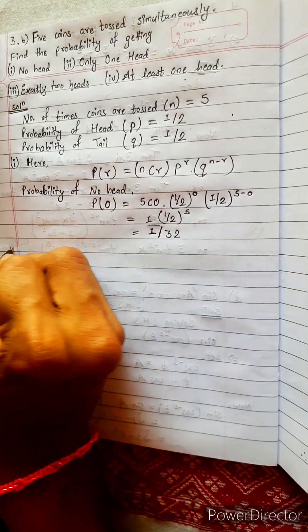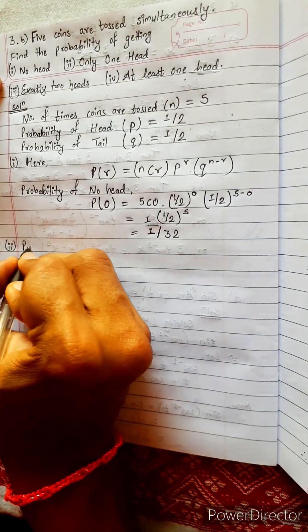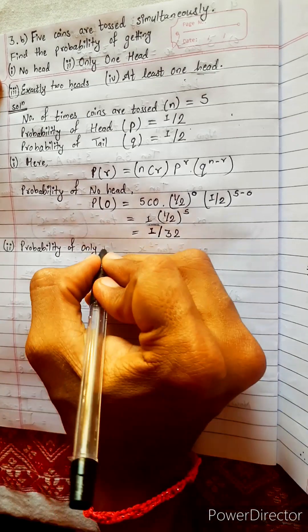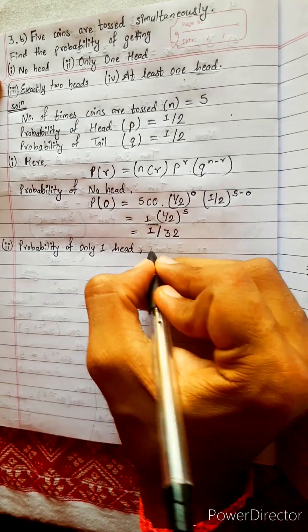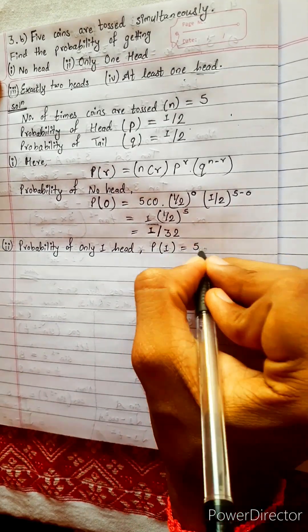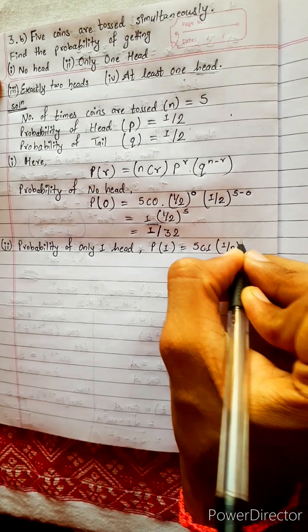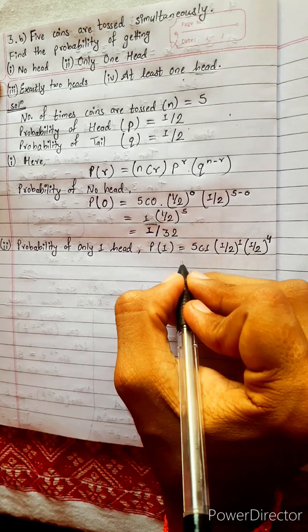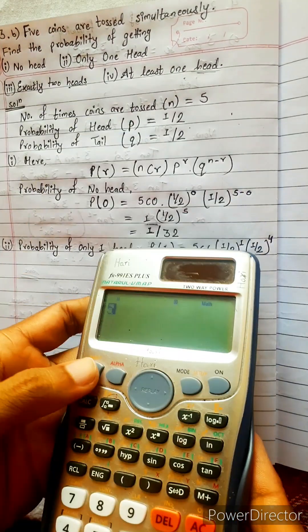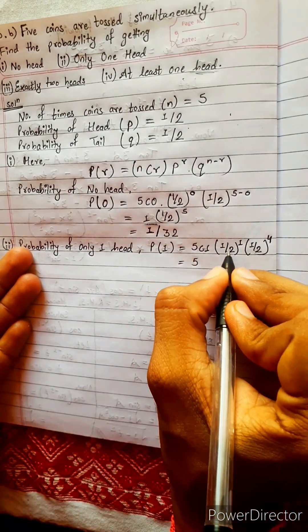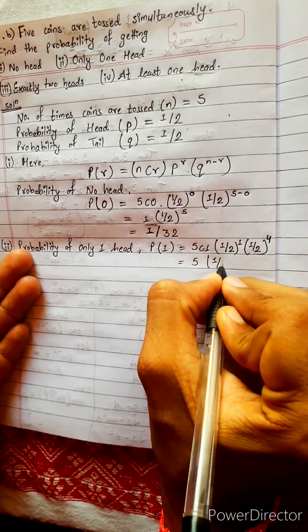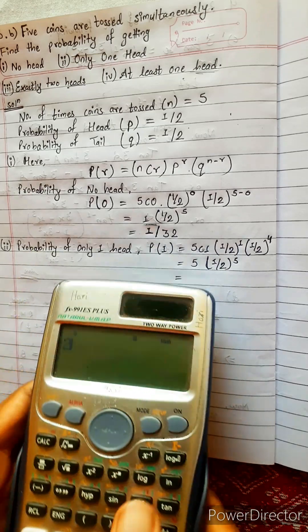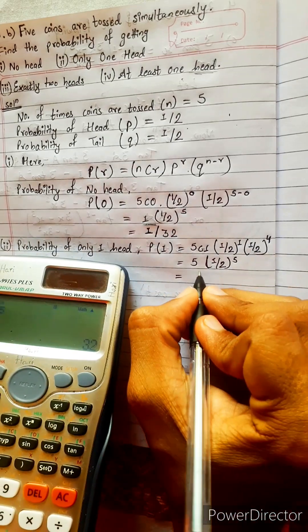Problem two: probability of only one head. P(1) = 5C1 × (1/2)^1 × (1/2)^(5−1) = 5C1 × (1/2)^1 × (1/2)^4. Since 5C1 equals 5, this gives 5 × (1/2)^5. Two to the power 5 is 32, so the answer is 5/32.